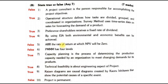Along with the MCQs, there were true or false questions. A project consultant is the person responsible for accomplishing the project objective — false. Operational structure defines how tasks are divided, grouped and coordinated in an organization — true. Preference shareholders receive a fixed rate of dividend — true. By using EIA, both environmental and economic benefit can be achieved — true. ARR: the rate of return at which NPV will be zero — false. PMMM has only four levels — false. Capacity planning is the process of determining the production capacity needed by an organization to meet changing demand for its product — true. Technical feasibility is about the engineering aspect of a project — true. Kaizen diagrams are causal diagrams created by Kaoru Ishikawa that show the potential causes of a specific event — true. And project is permanent — false.